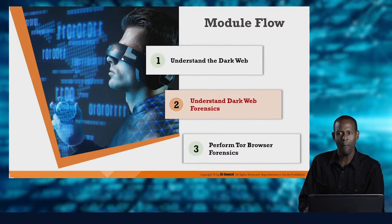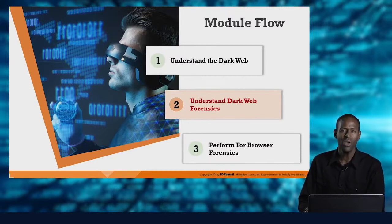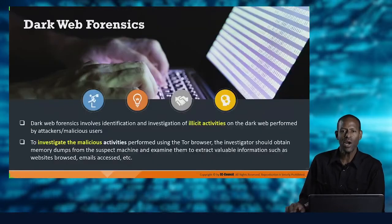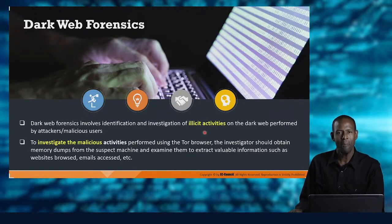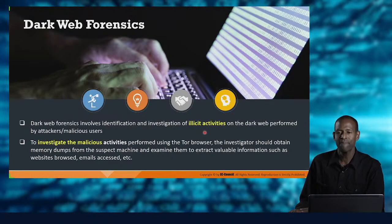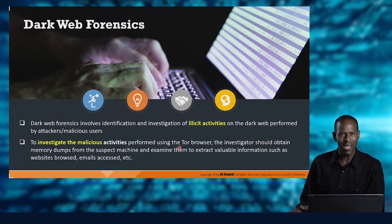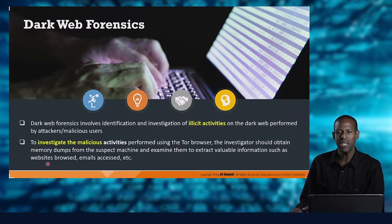Now let's talk about dark web forensics. On your forensics team, you might be required to trace activity into the dark web — for example, if an insider is using the dark web as part of an attack against your organization and you need to follow them. With dark web forensics, we want to find illegal, illicit activities that malicious users — insiders, external hackers — are conducting. We follow the same path using the Tor browser to get information: websites browsed, emails, access times, and what information was exchanged.